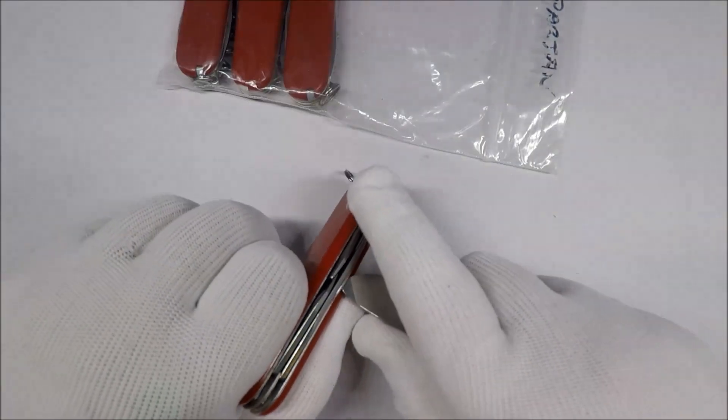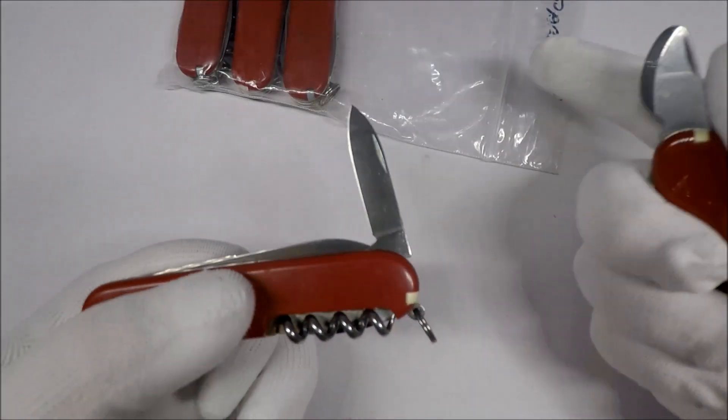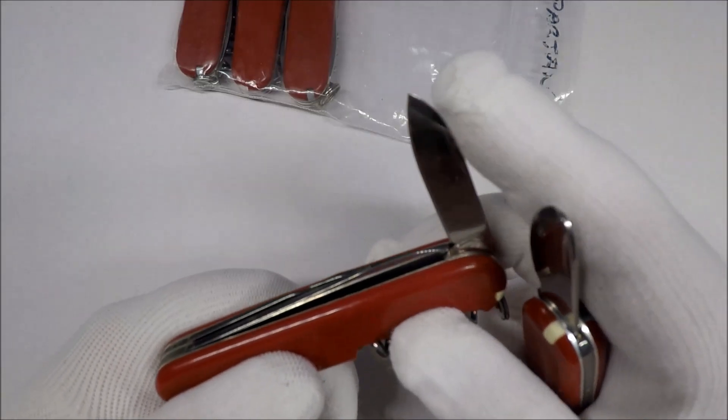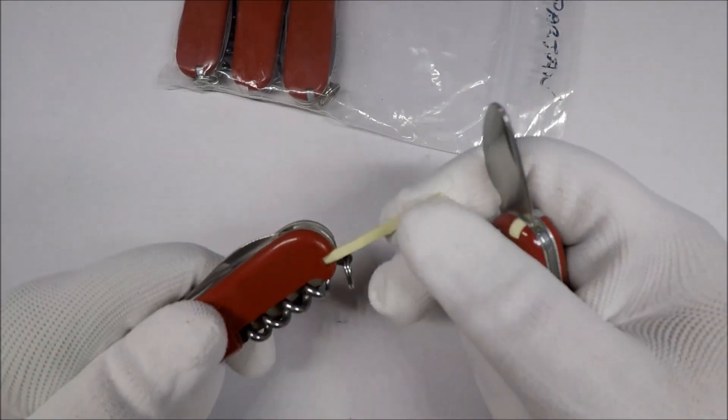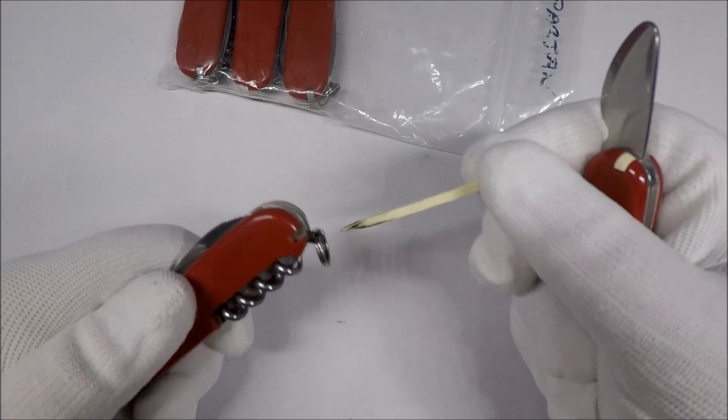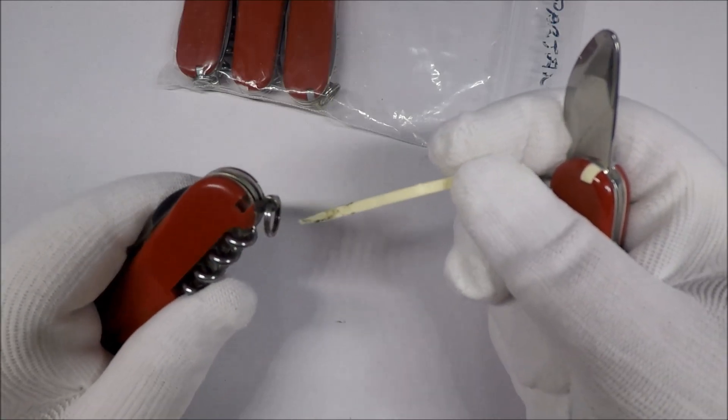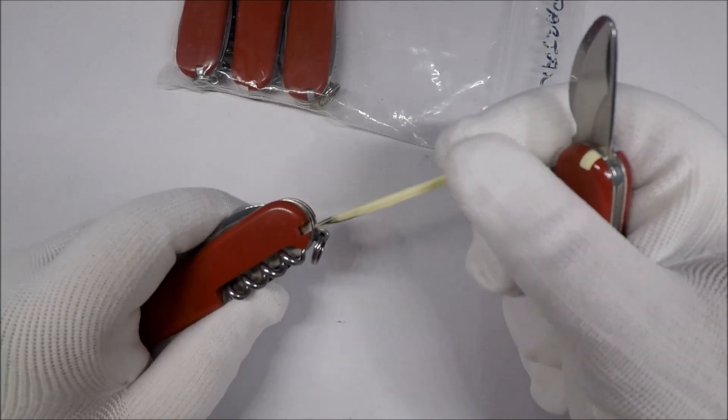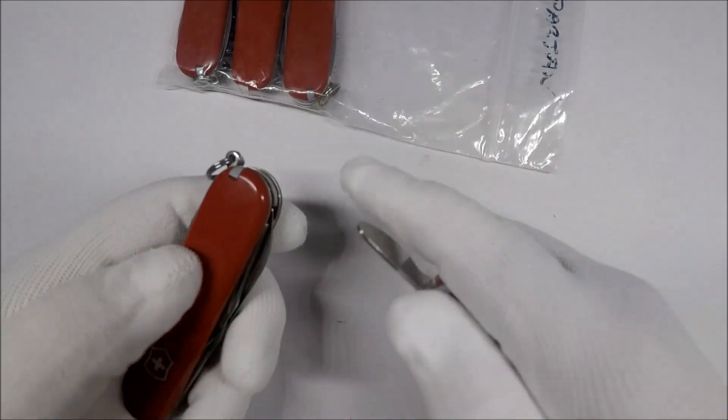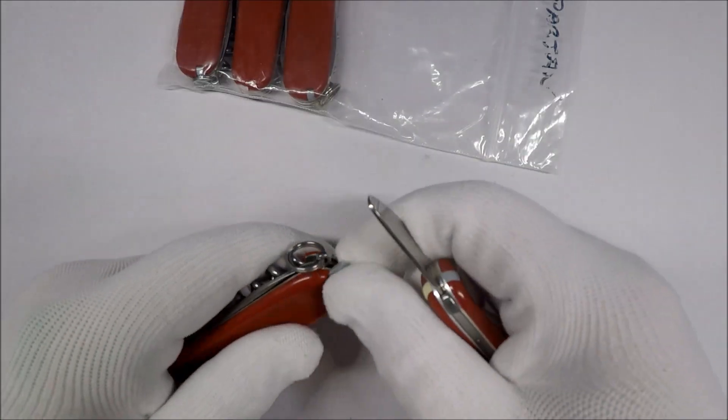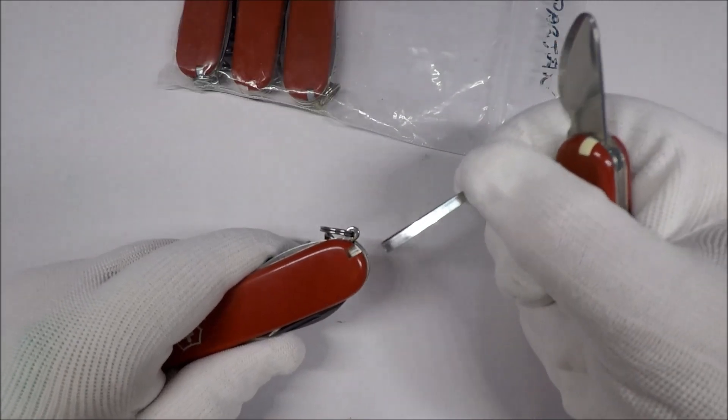So you have the large Swiss Army knife blade, you have the small Swiss Army knife blade, toothpick—and these are used so the toothpicks and tweezers when I replace the scales are very much being thrown away. So toothpicks and tweezers.